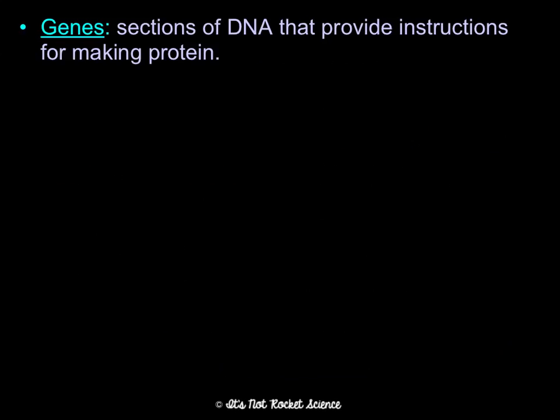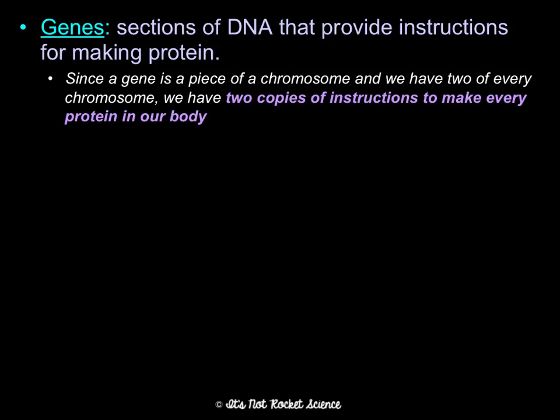Genes are sections of DNA that provide the instructions for making a protein. Since a gene is a piece of a chromosome and we have two of every chromosome, we have two copies of instructions to make every protein in our body, and your proteins determine the traits you have.